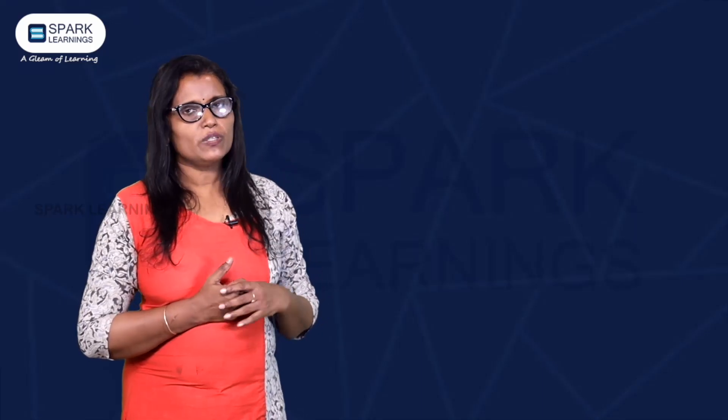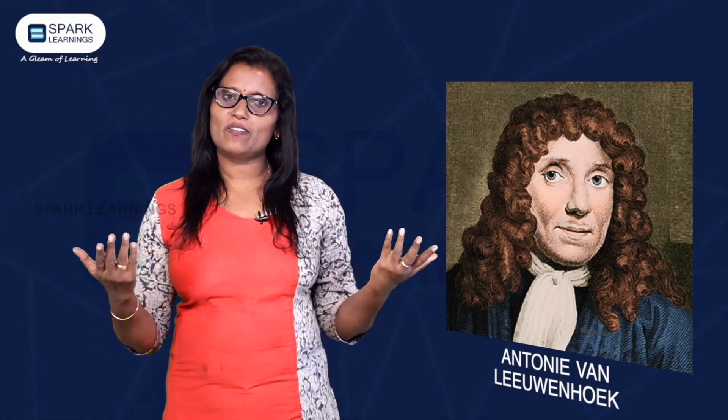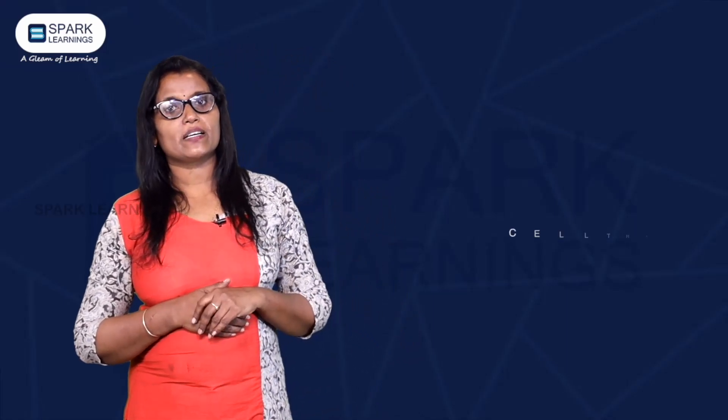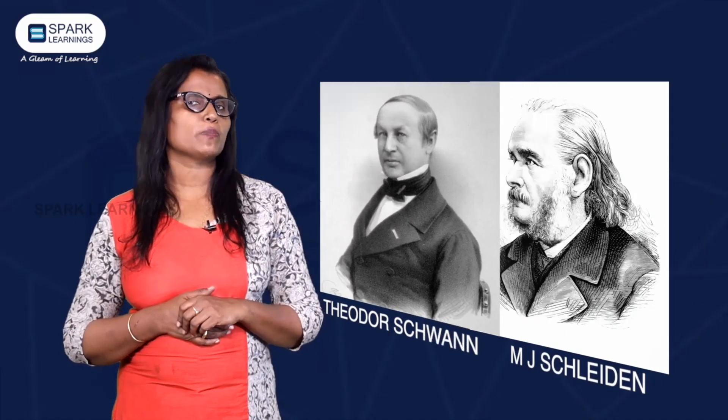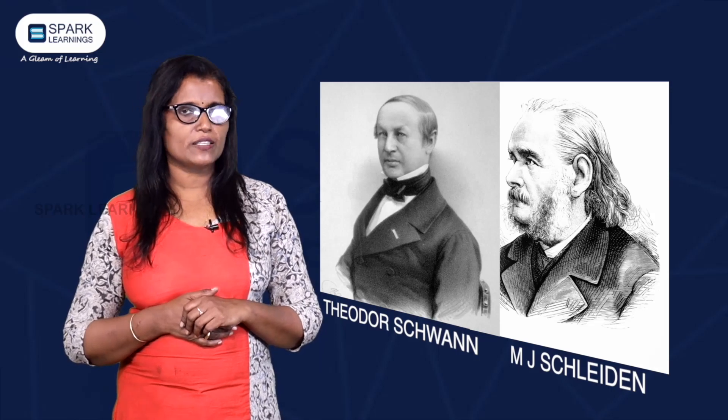Anton van Leeuwenhoek discovered a living cell — he observed living bacteria. In 1838-39, MJ Schleiden and Theodore Schwann proposed the cell theory. Schleiden was a botanist and Schwann was a zoologist.